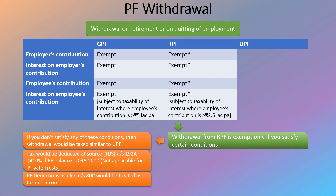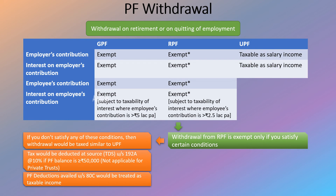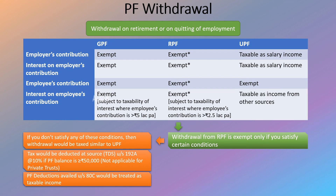Now let's see how withdrawal from an Unrecognized Provident Fund account would be taxed. In respect of the employer's contribution, it would be taxed as salary income. Interest on the employer's contribution is also taxable as salary income. The employee's own contribution is exempt, but interest earned on the employee's contribution would be taxed as income from other sources.